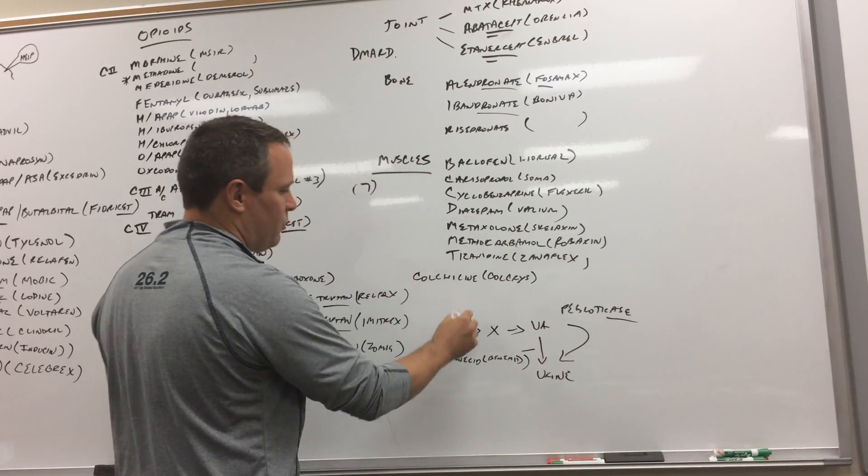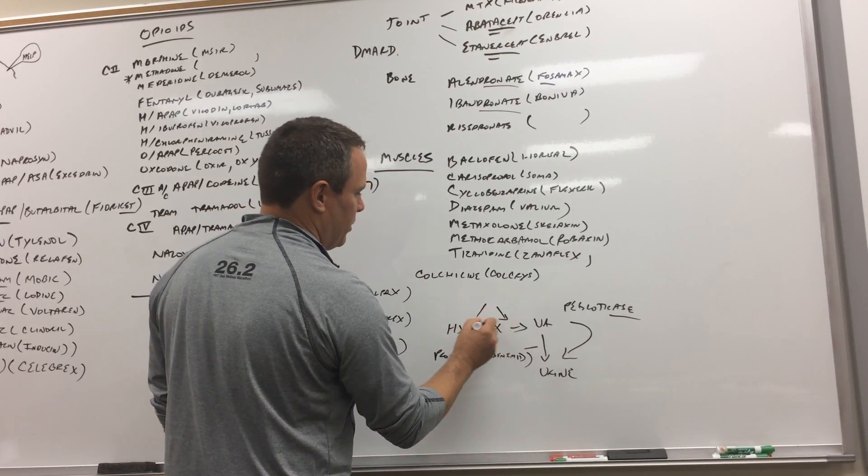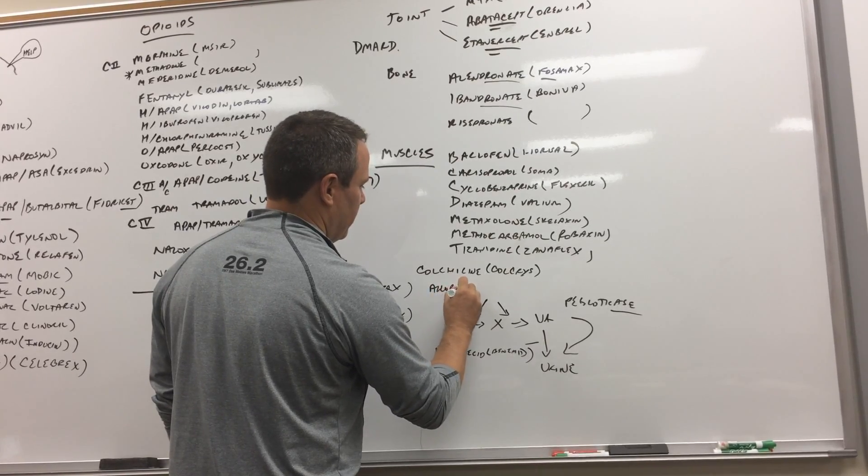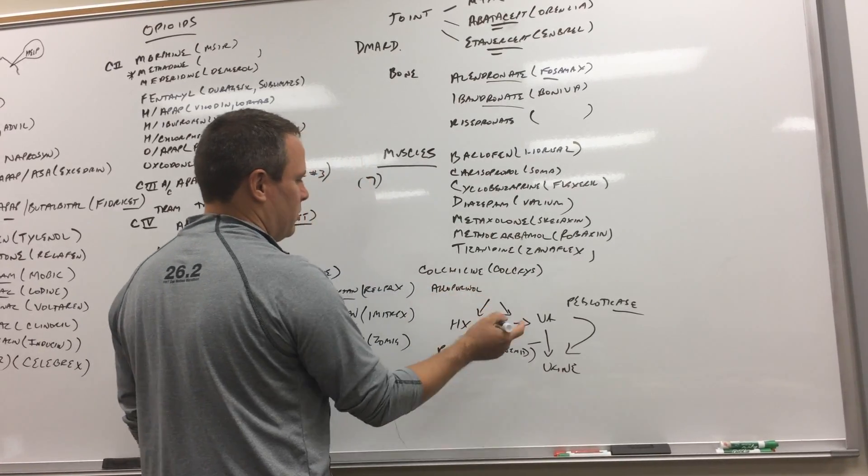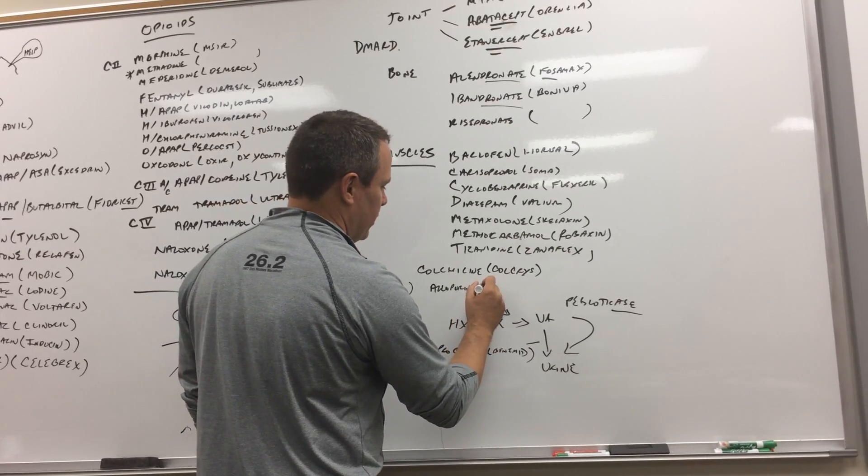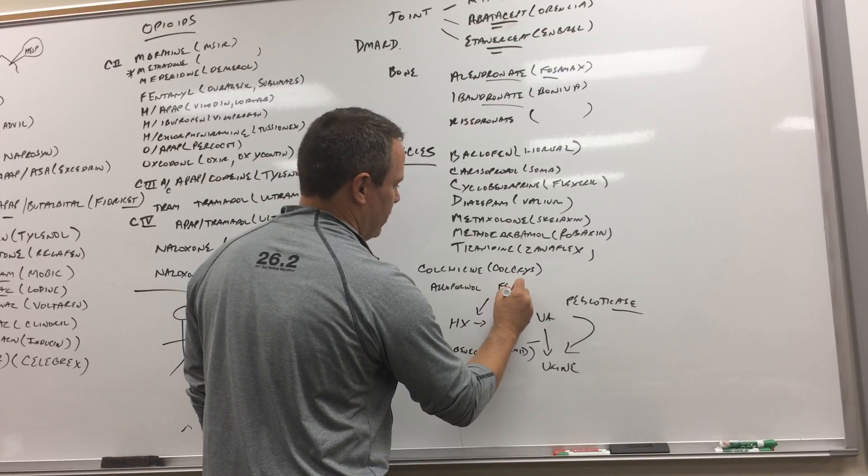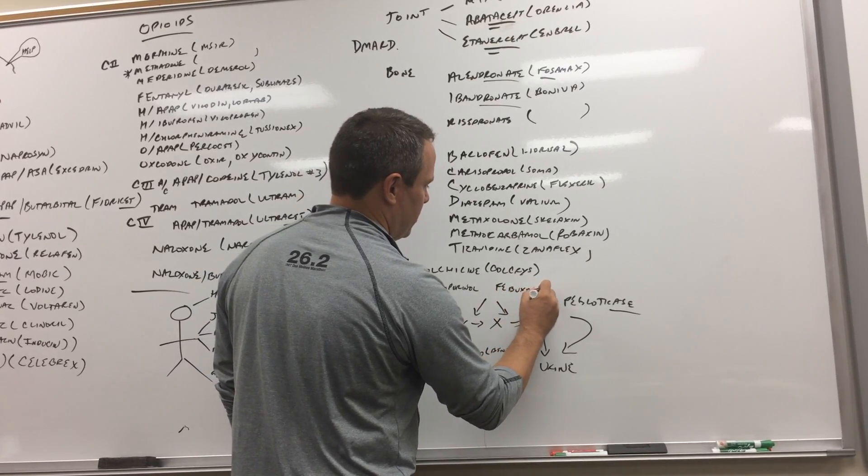And then you've got the two up here. So you've got the allopurinol. Allopurinol - you make the joints all purinol. And then you've also got febuxostat. So '-stat' which is Uloric.